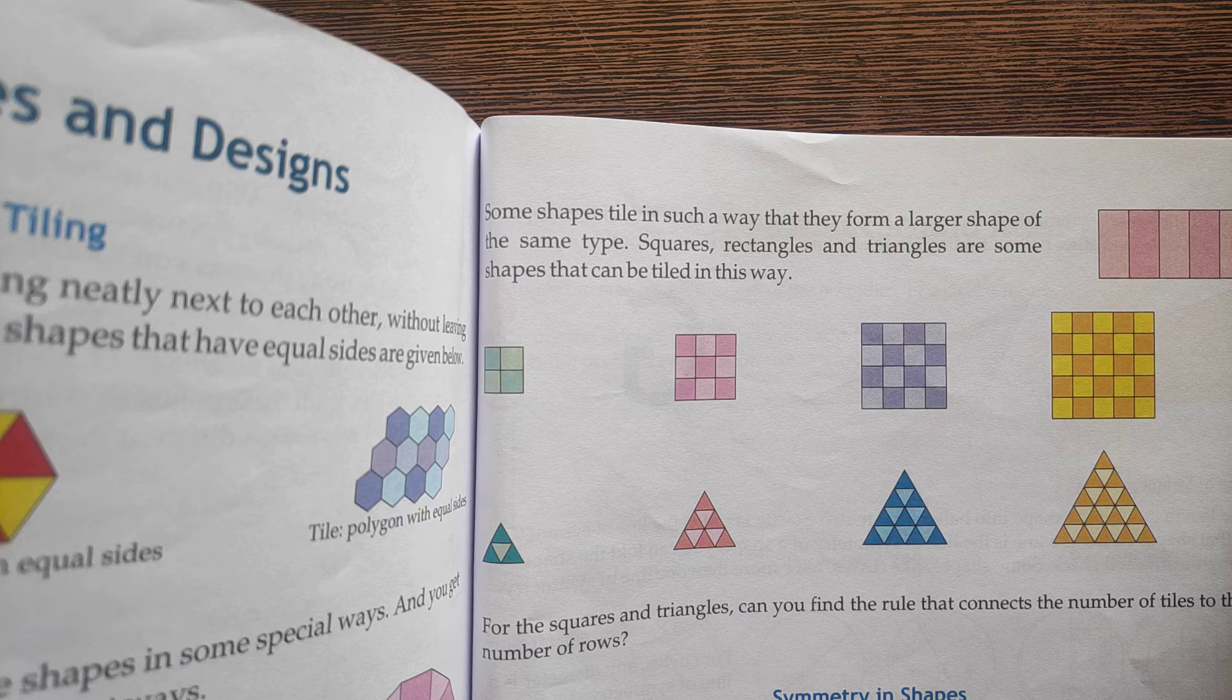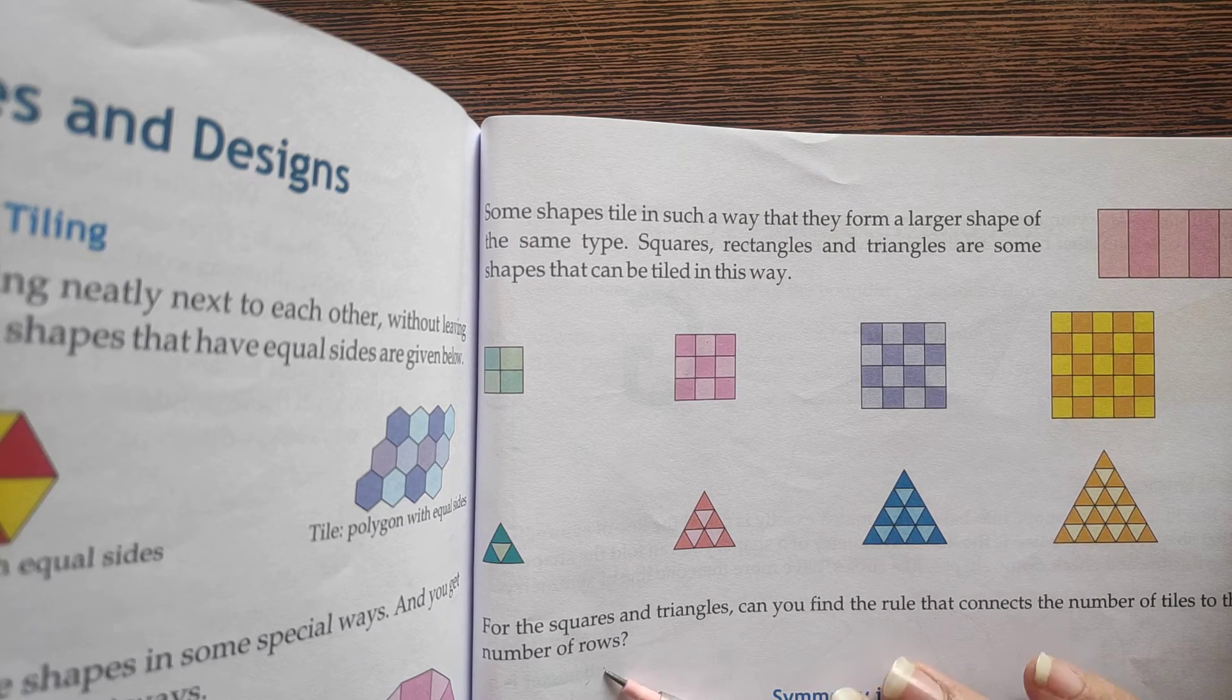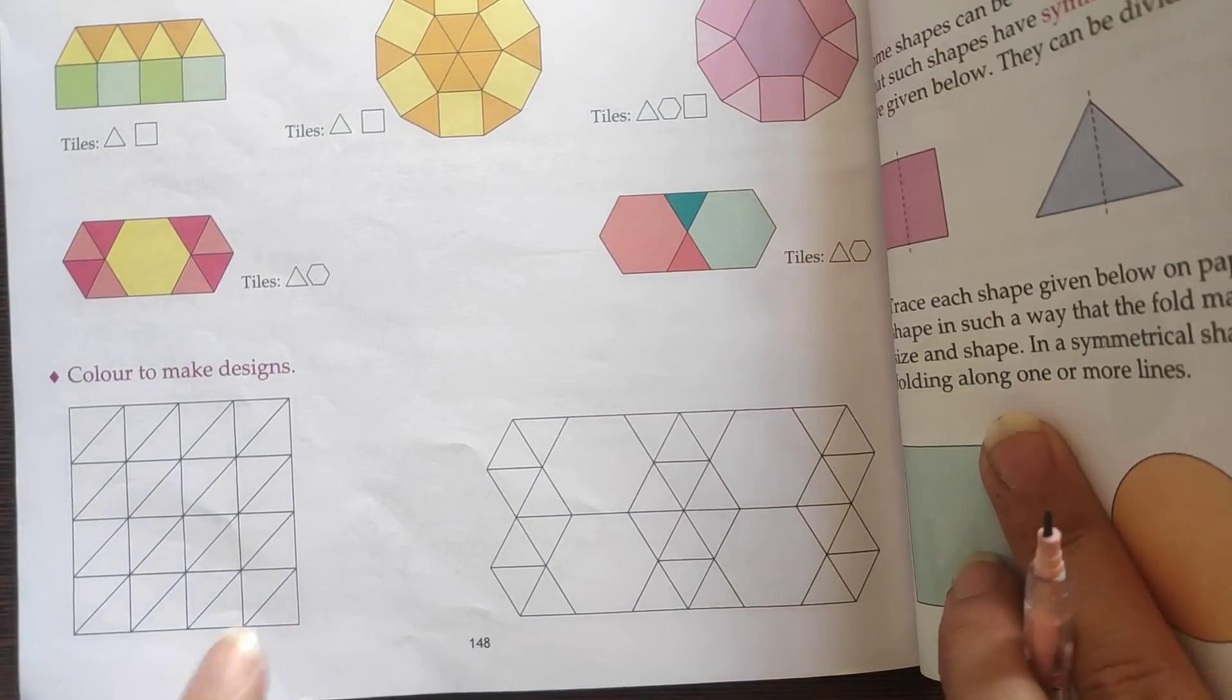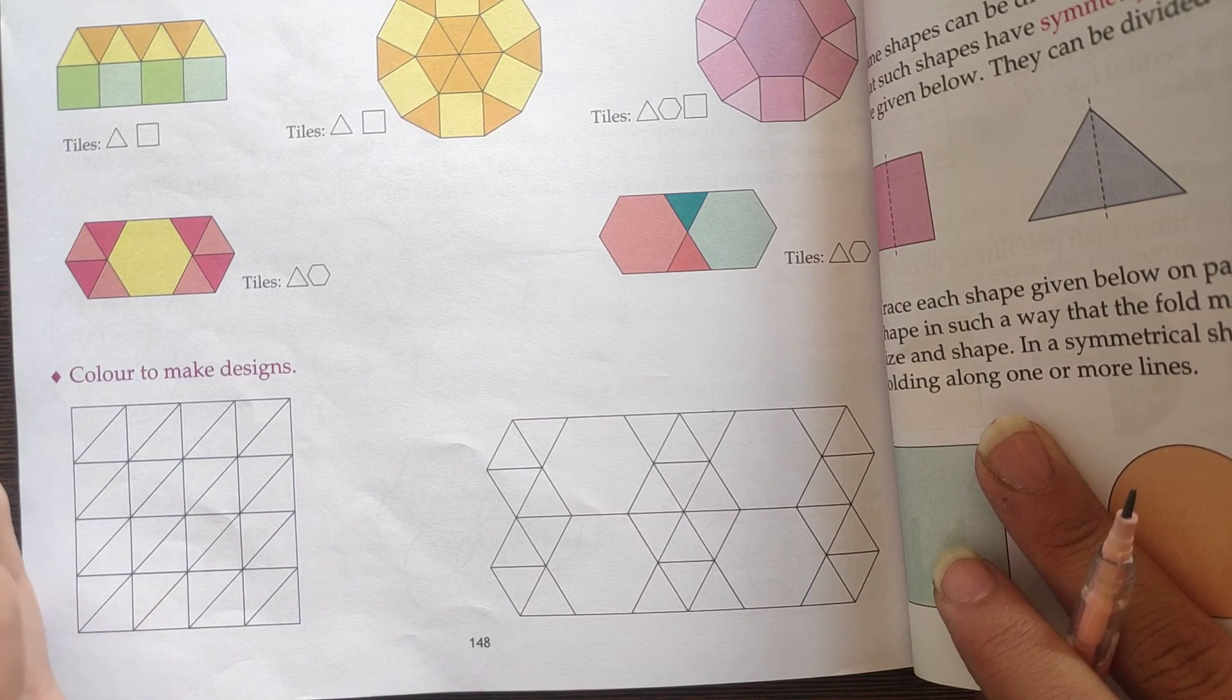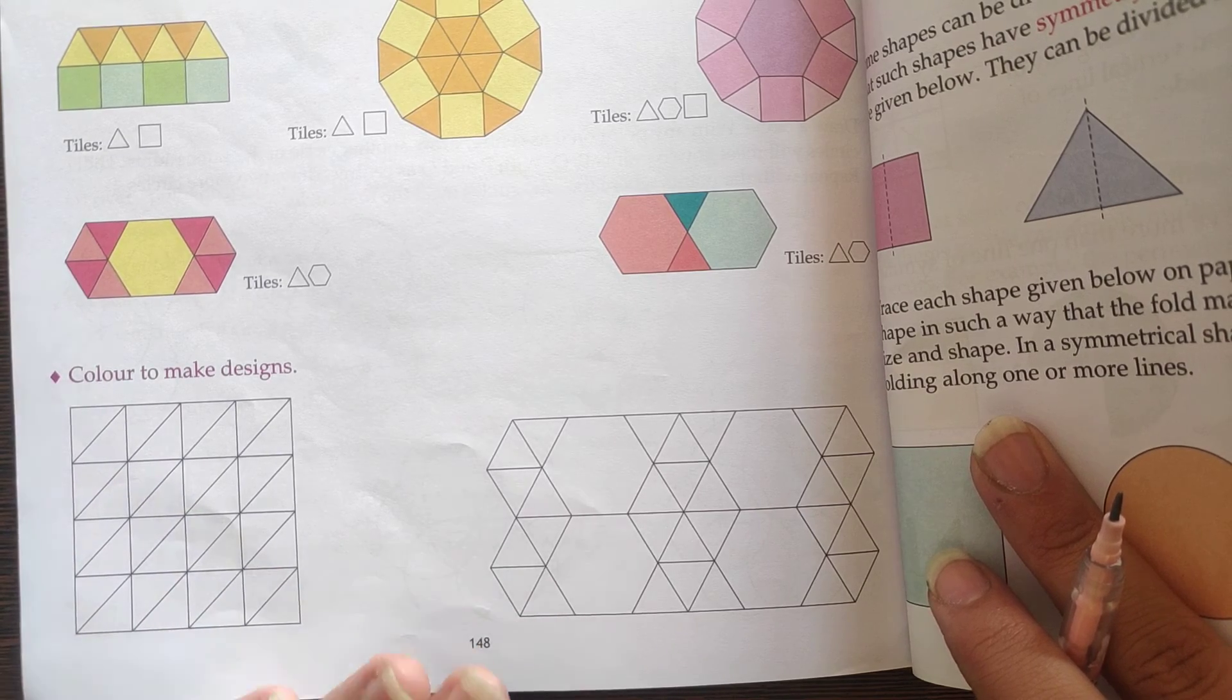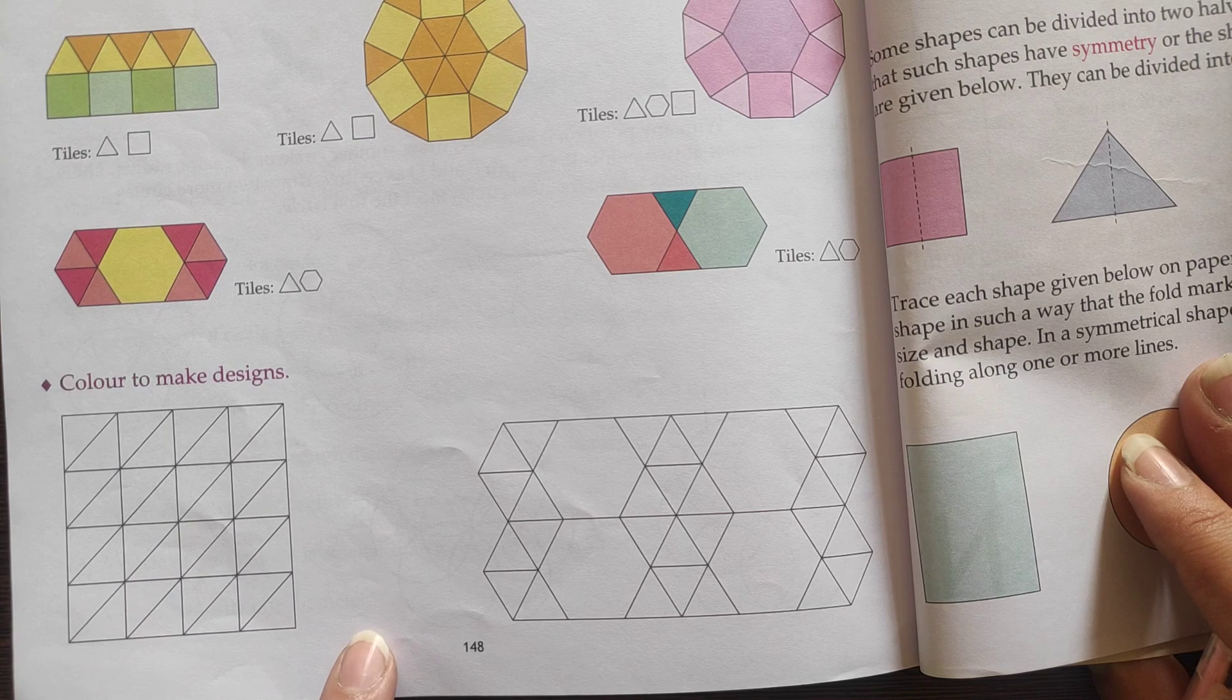So, for the squares and triangles, they said, can you find the rule that connects the number of tiles to the number of rows? If you have any rule here, students, if you have a number of columns and rows, then you can do different colors here. So, you can do different colors here. Students, this is your homework. You have to design them, to color them. Okay?